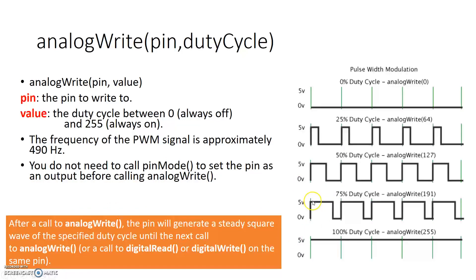Here is an example of a waveform that stays high for three fourths of the time — in other words 75% of the time — and stays low for 25% of the time. These green bars represent a single period of the waveform, and this waveform repeats itself as a periodic waveform. So in one period you see: 0% duty cycle, 25% duty cycle, 50% duty cycle, 75% duty cycle, and 100% duty cycle — where it stays high for 100% of the time.